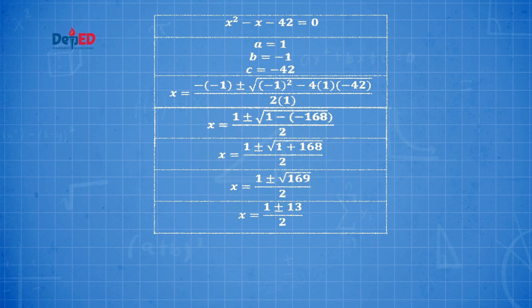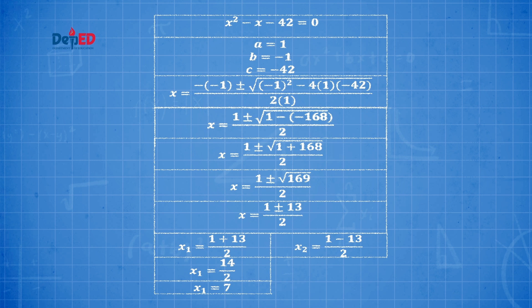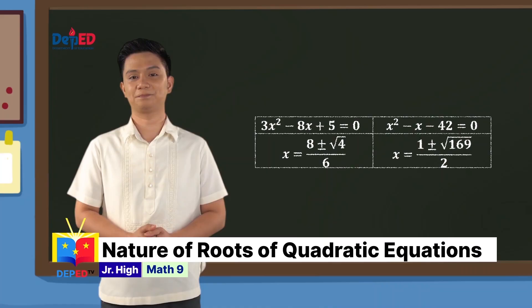The principal root of 169 is 13. Hence, x = (1 ± 13) / 2. Breaking down: x₁ = (1 + 13)/2 = 14/2 = 7, and x₂ = (1 − 13)/2 = −12/2 = −6. The roots are not equal but they are also rational. Looking at the discriminants of this pair — 4 and 169 — they are both positive and both perfect squares. When the discriminant is positive and a perfect square, the roots are unequal but rational.